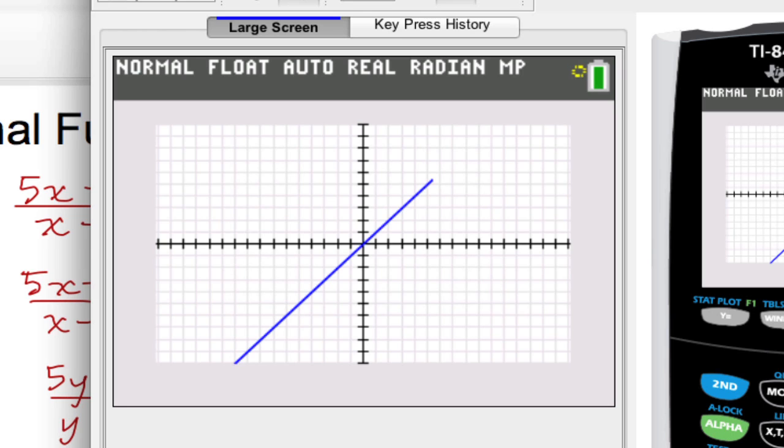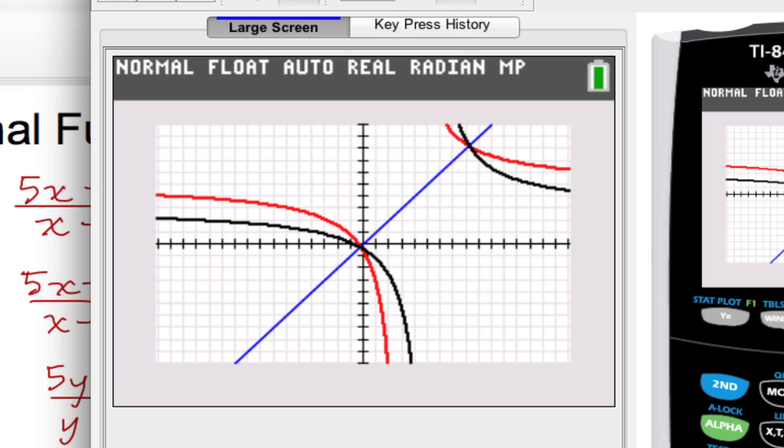There's the blue for the line of symmetry here's the red which is the original function and then here comes the black which is our inverse and notice that we do have symmetry with respect to this diagonal line here y equals x and let's just put in a few values to test out what we have here.